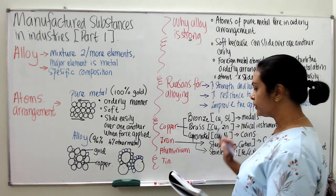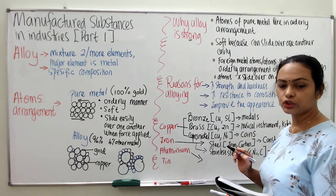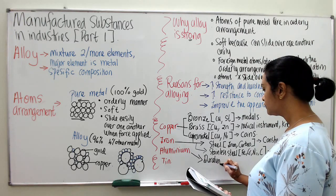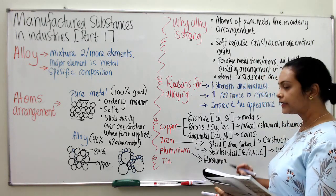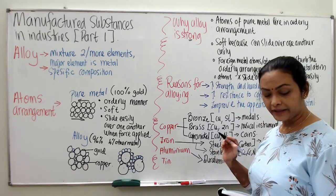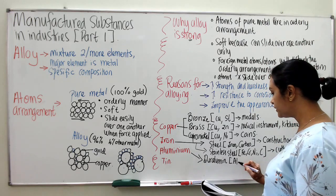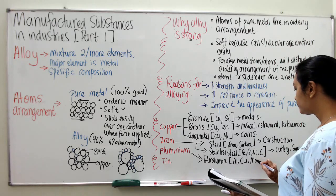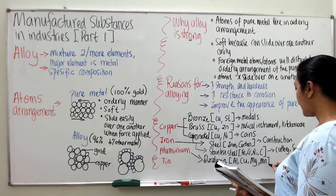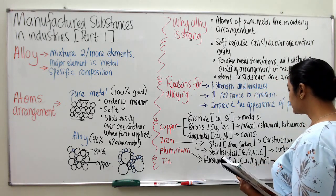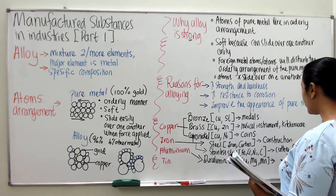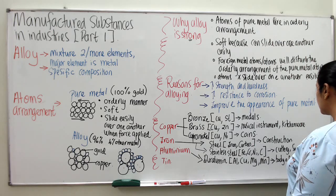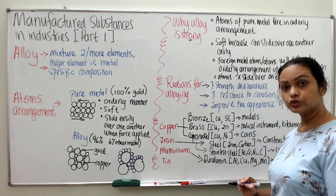Now let's go to aluminium. Aluminium has one important major alloy which is called duralumin. Duralumin is light and strong. It is made up of aluminium as the major metal, plus copper, magnesium, and manganese — a type of transition metal. Since it is light and strong, it is used for the body of aircraft or bullet trains.